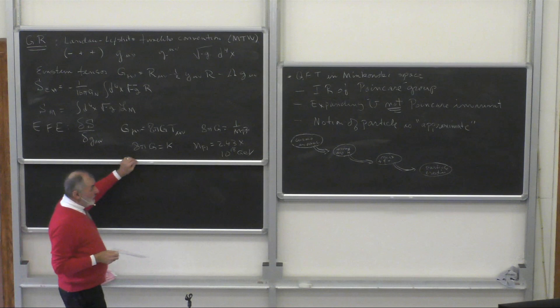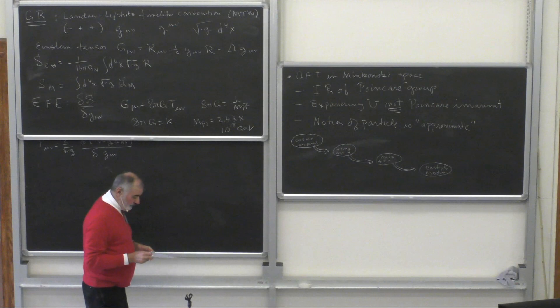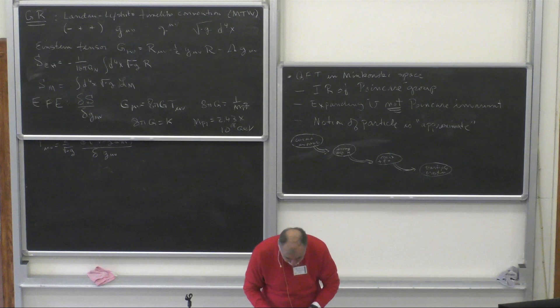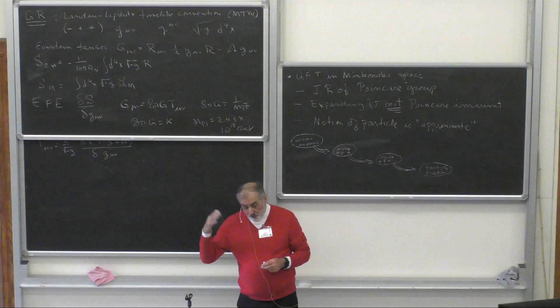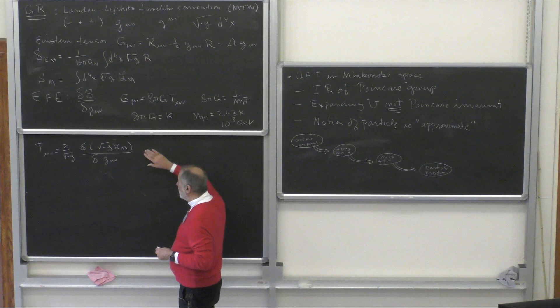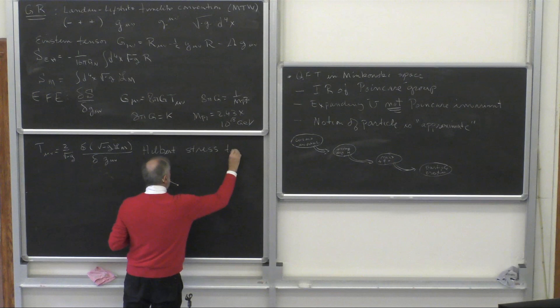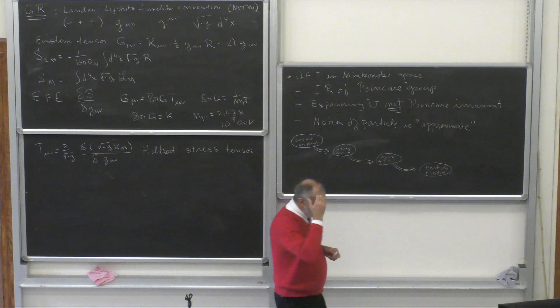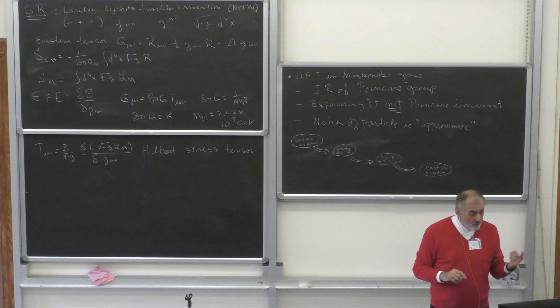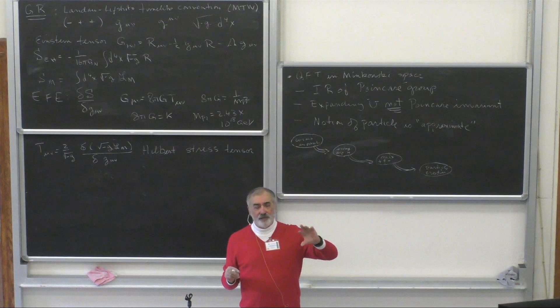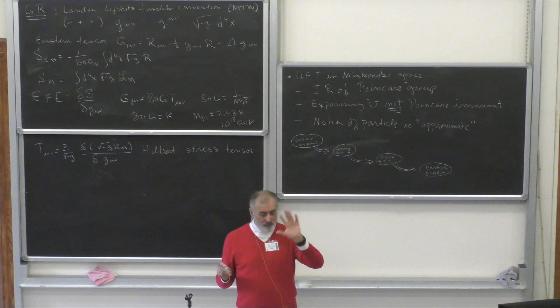One subtlety: you can't use the canonical stress-energy tensor or the Noether stress-energy tensor. This is known as the Hilbert stress-energy tensor. There are two difficulties with the Noether or canonical stress-energy tensor: one is that it won't be symmetric in μ and ν, and the other is that it doesn't capture the energy associated with internal things like spin.